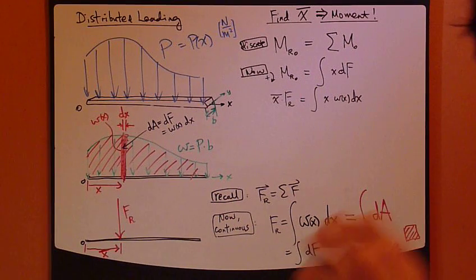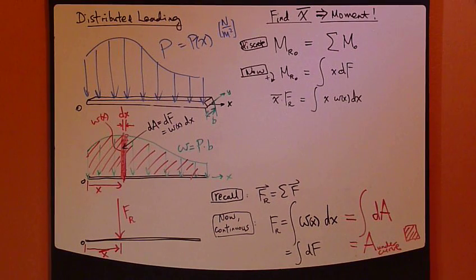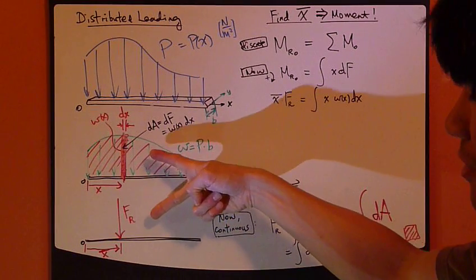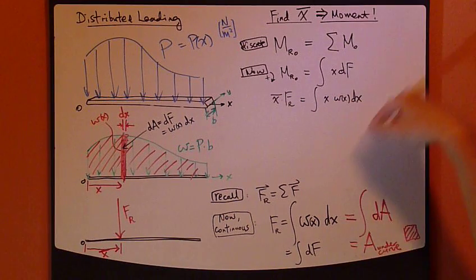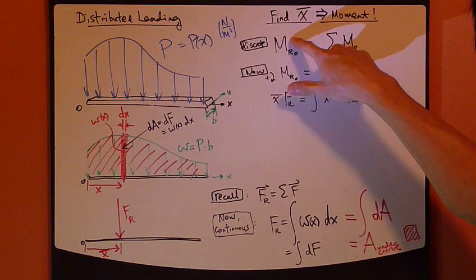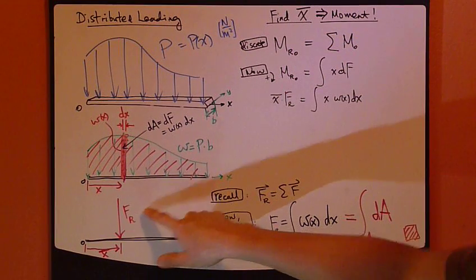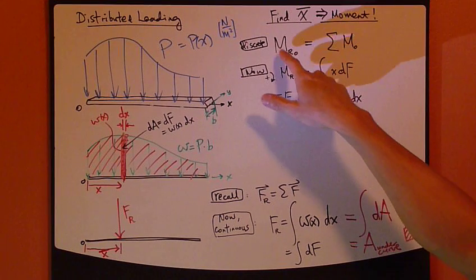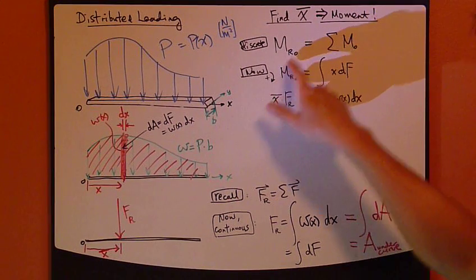Now, we're going to be using moment as the key to link these two together. So right here, this moment created by this FR, this resultant force, let's call it MR0. So moment, resultant, about point O.